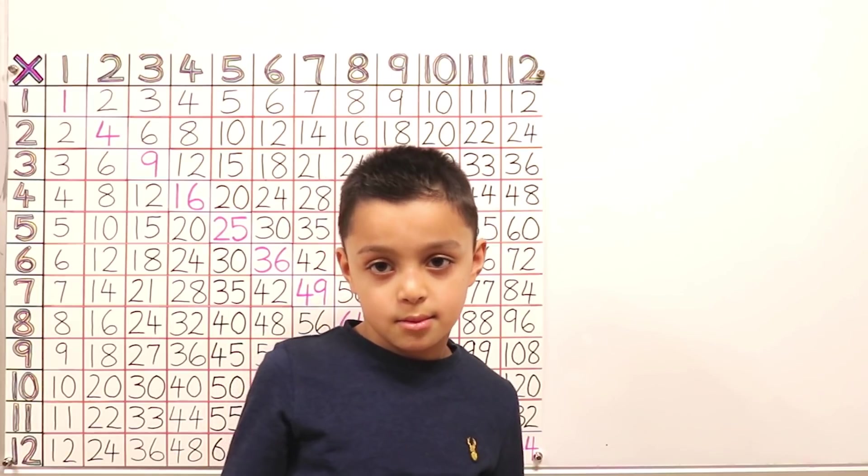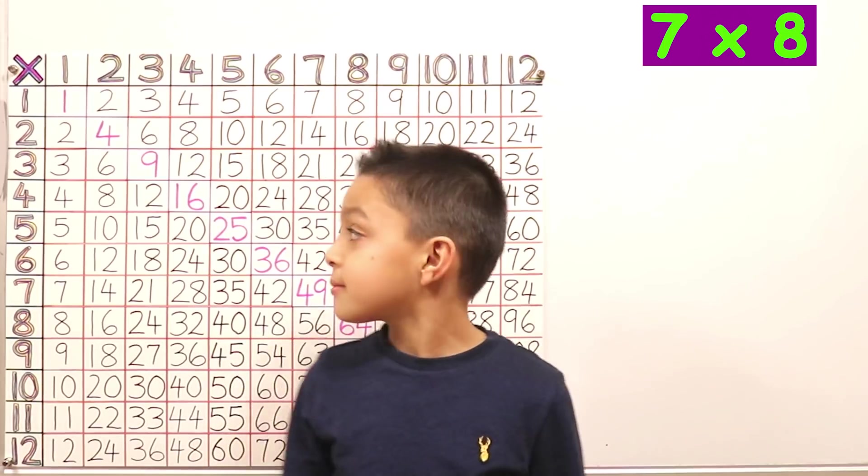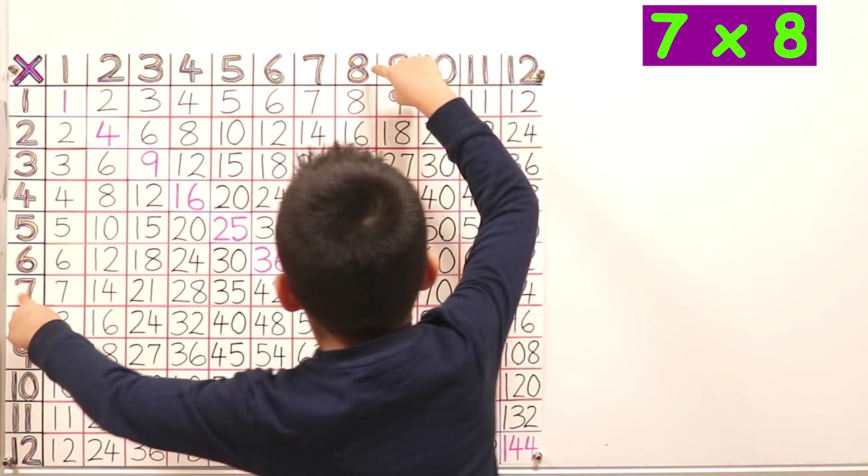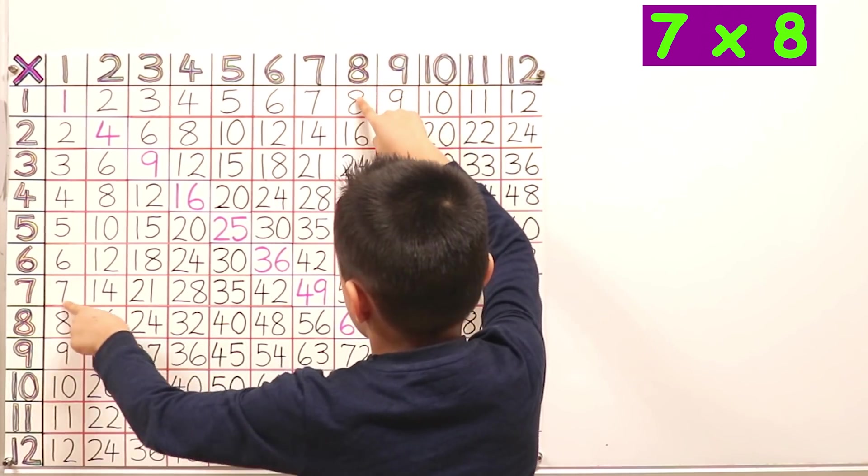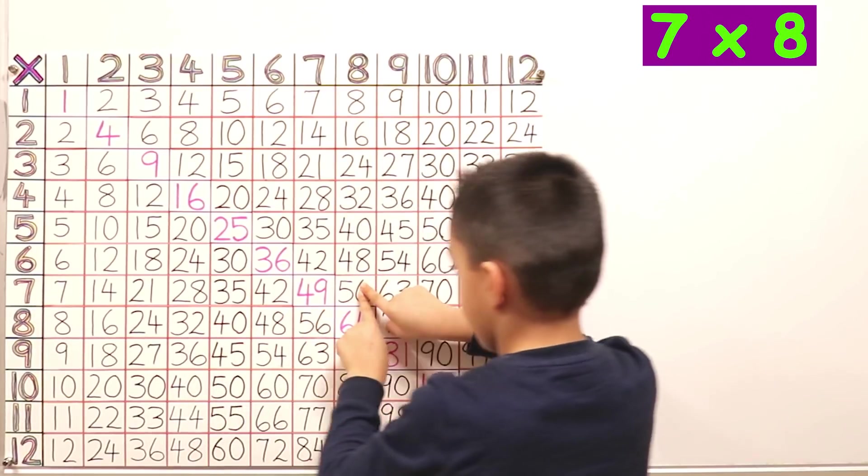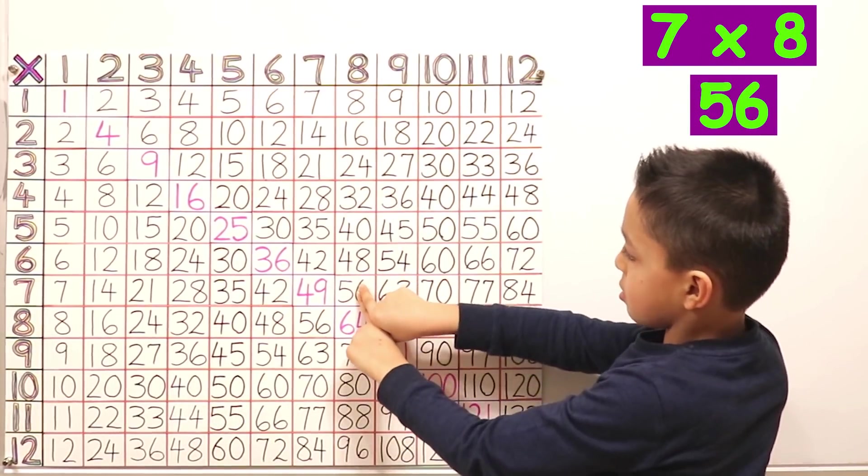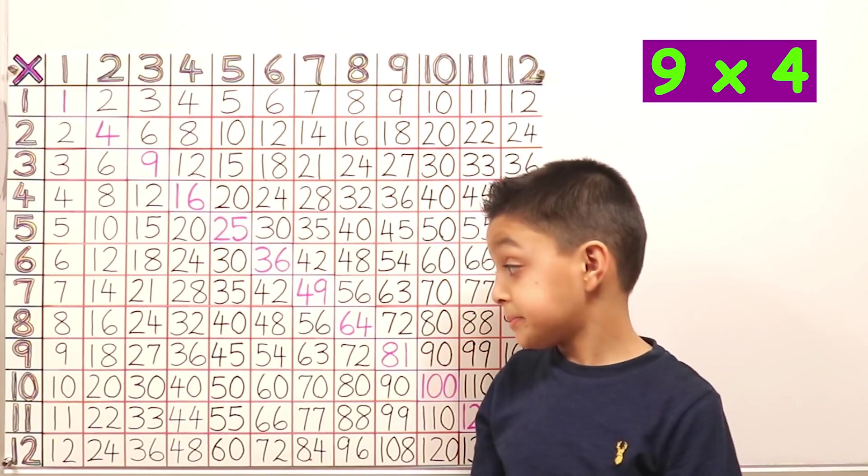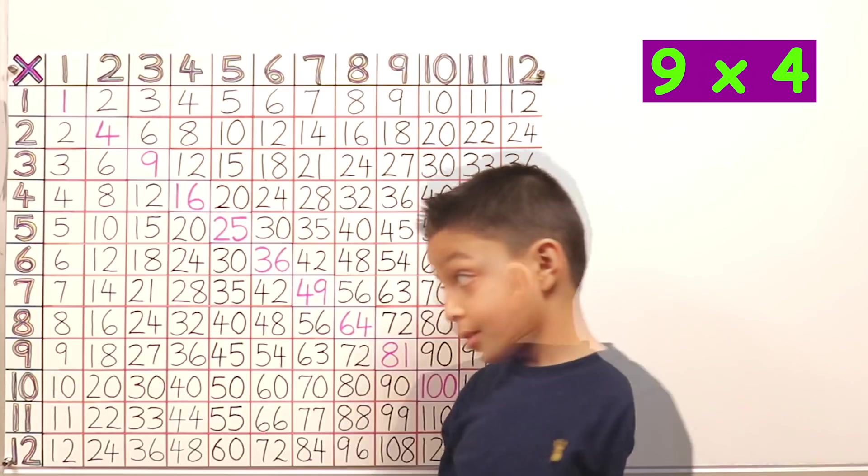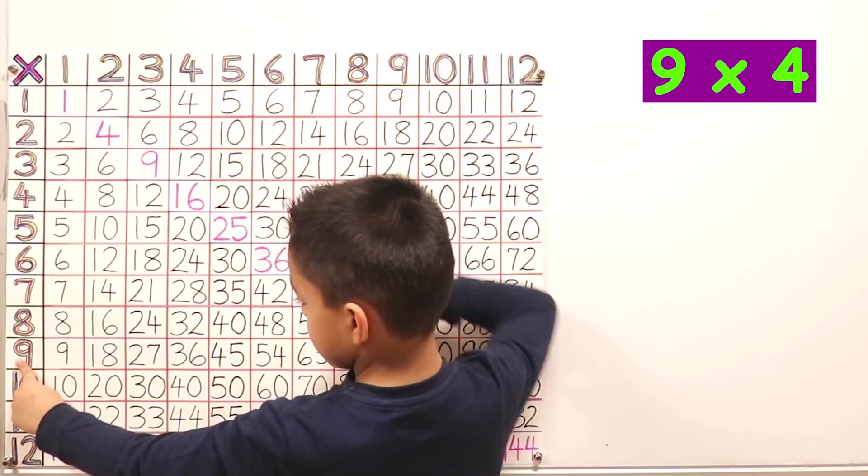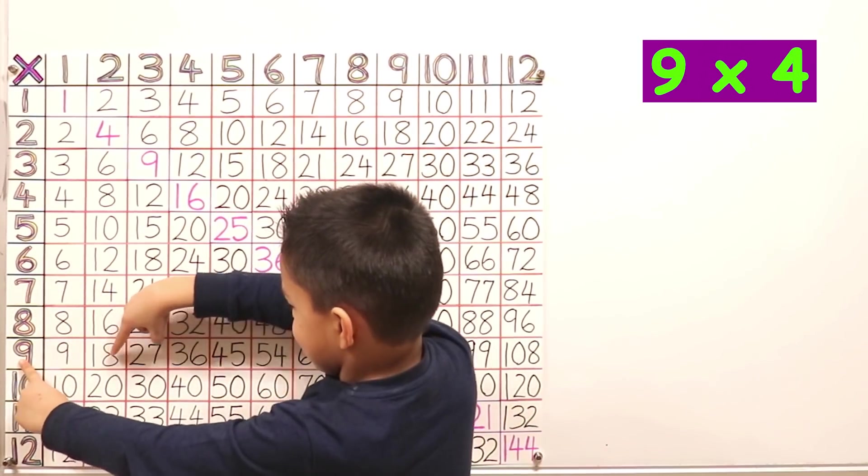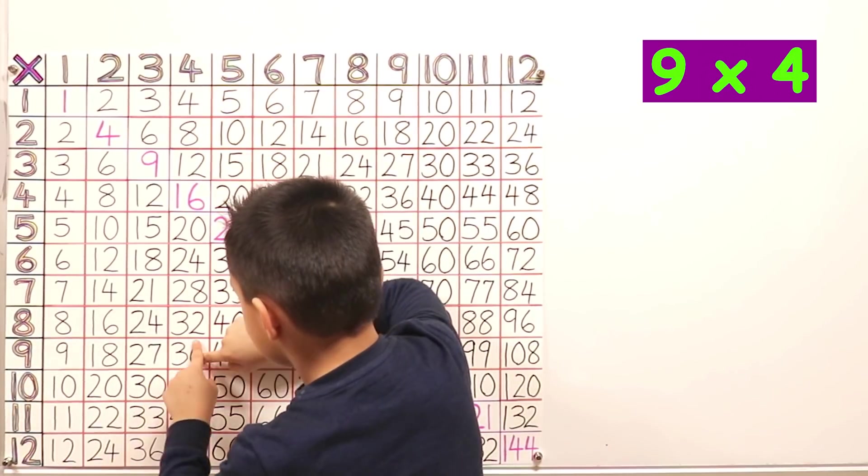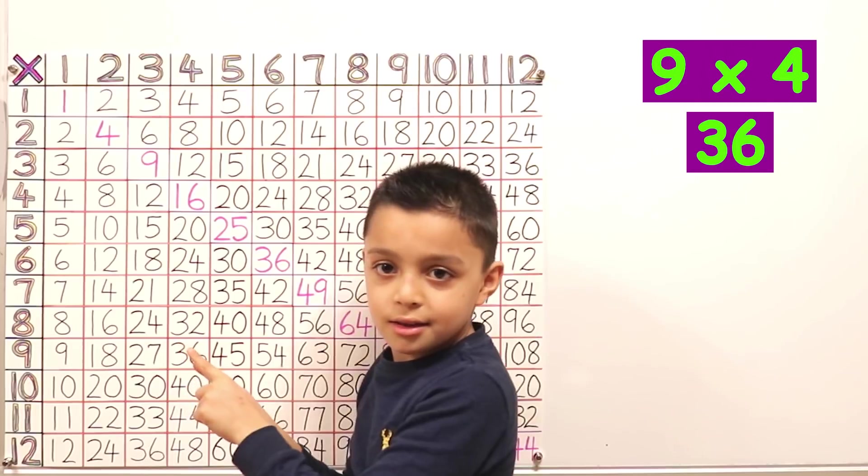Can you work out for me seven times eight? Seven times eight. So we go to our eight and our seven. Now stand to the side. And it goes to fifty-six. Okay, seven times eight equals fifty-six. What about nine times four? So come across, what number is it? Thirty-six. Very good.